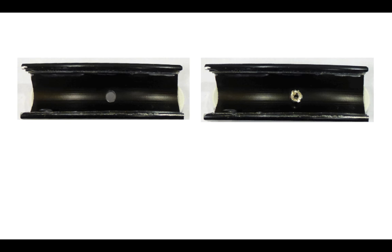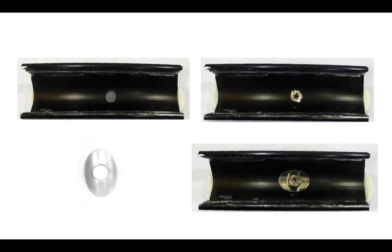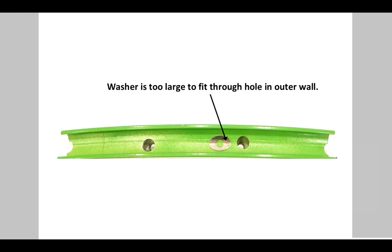Here we see a very inexpensive single wall rim. There is a nipple in it, but if I take one of these washers and I put that under the nipple, then I will get some considerable benefit in the strength of the rim. The problem is that most of the time these washers are too large to fit through the outer wall.